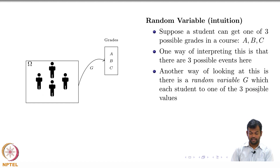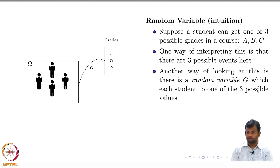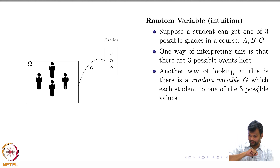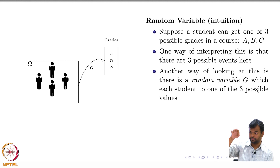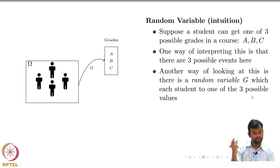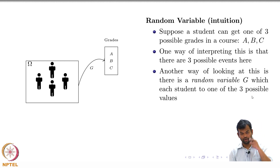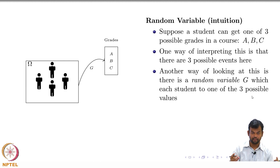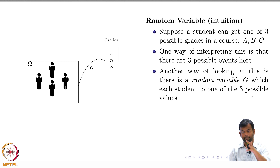The other way of looking at it is that you have a set of students and a random variable — which is actually a function — that maps each of these students from your set to a particular value. So a random variable is actually a function which maps your outcomes to values. For each student we have a function which connects them to one of these three possible grades.